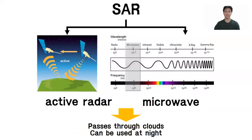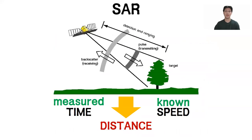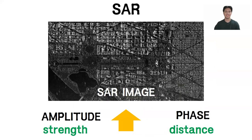SAR is an active radar technology operating in microwave intervals, thus allowing signals to pass through clouds and acquire images day and night and in all weather conditions. SAR records the signal's transmission and reception time, and with its known speed, the sensor-to-target distance can be calculated. This distance represents the phase information contained in a SAR image, and together with the amplitude information — or simply the strength of the backscattered signal — the InSAR technique can be performed.